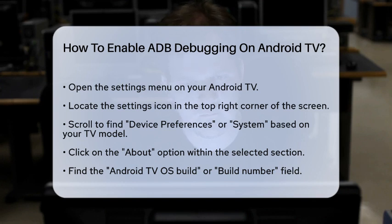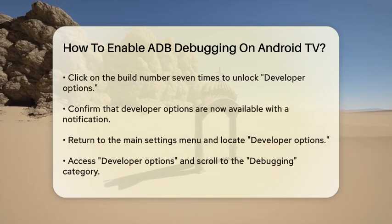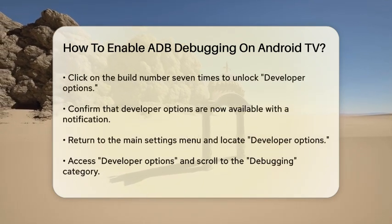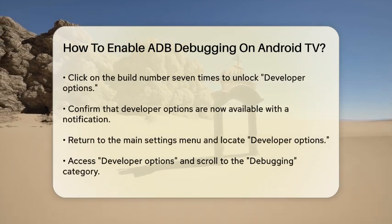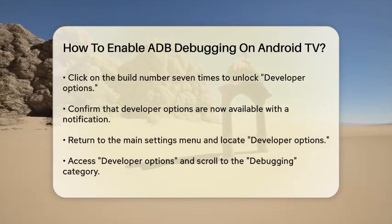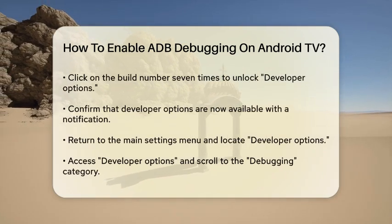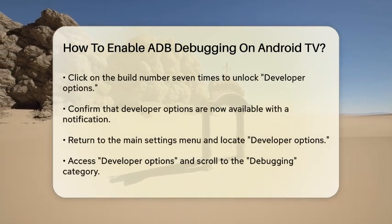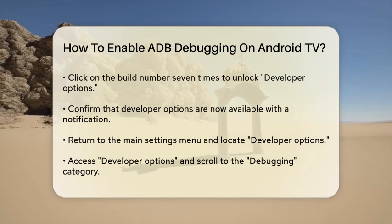Here, you'll see an About option. Click on this. In the About section, look for the Android TV OS Build or Build Number field. You need to click on this field seven times — this action will unlock the Developer Options on your TV. After you've clicked the Build Number seven times, you'll see a message indicating that the Developer Options are now available.